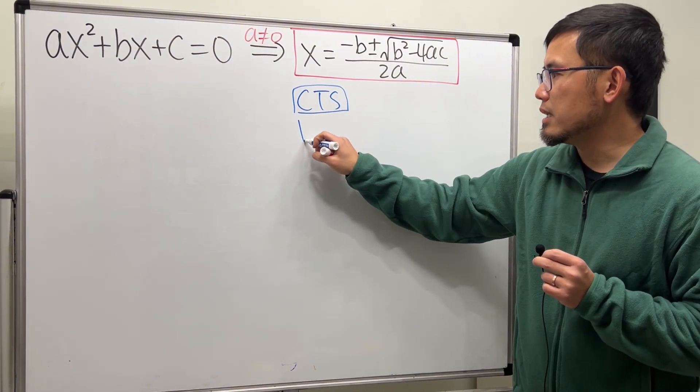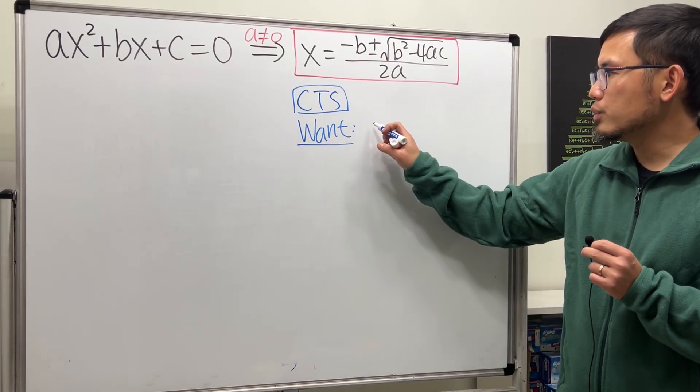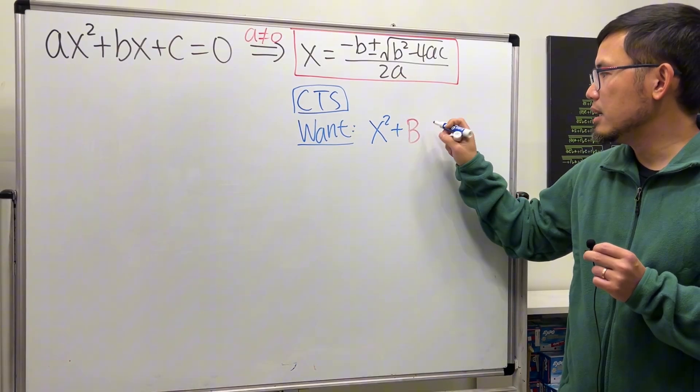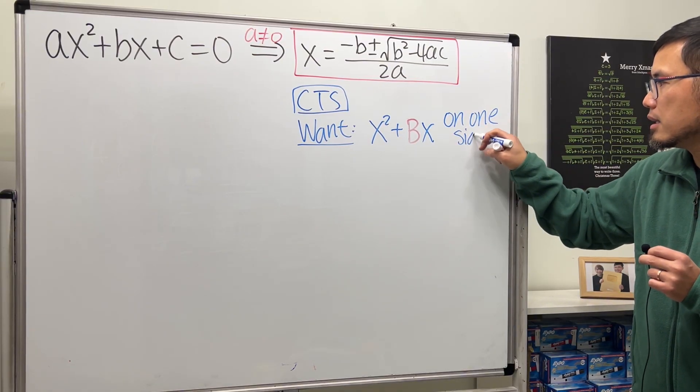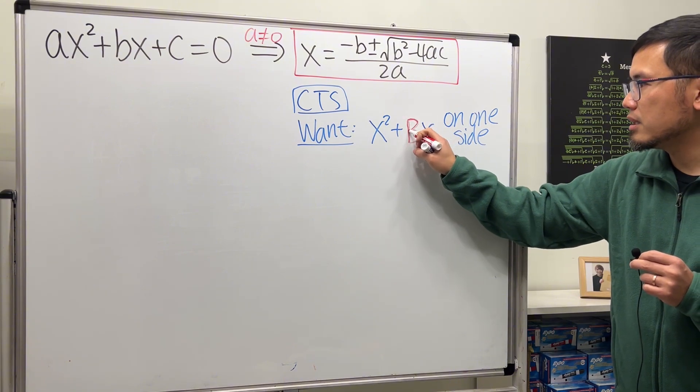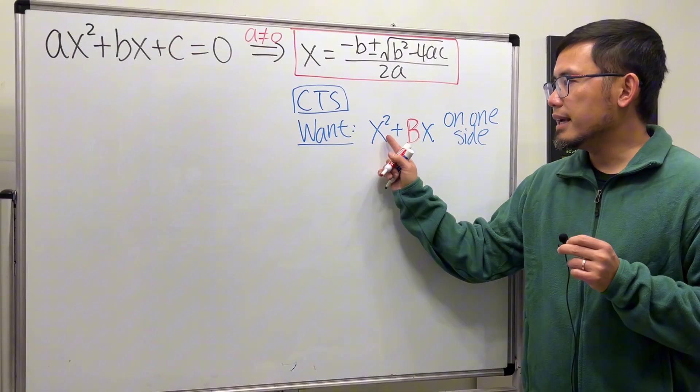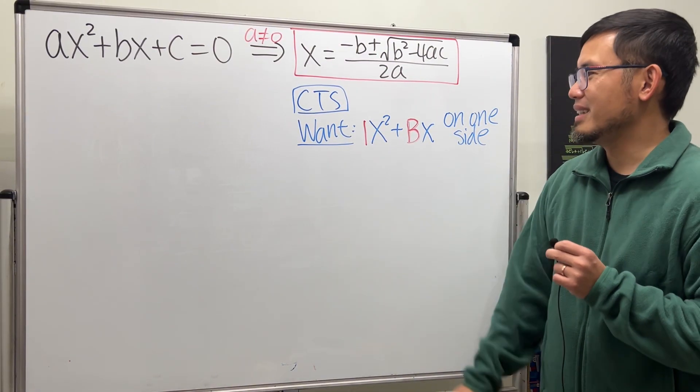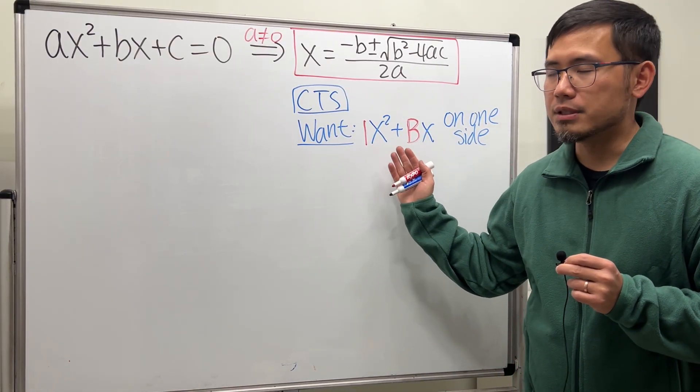CTS, completing the square. This is what we want to begin. Step one: you always want to have x² + Bx on one side. Notice that I put down a B right here, capital letter, because I used little b right here already. And notice I said x², so what's this number? One, technically it's one. So let's go ahead and make this happen first.